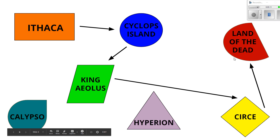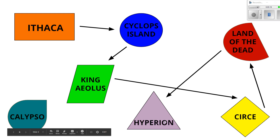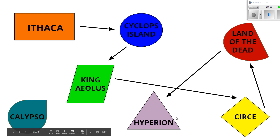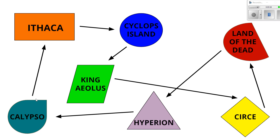For Circe, you might want to draw some pigs to show that's where the crew got changed into pigs. For the Land of the Dead, you might draw some zombie-type figures — be a bit creative with that. Then they got to Hyperion's Island, and between there and the previous stop is where they were attacked by the dragon and the whirlpool — you can draw those in. At Hyperion you might do a skull and crossbones, some cattle, or a storm. Then they got to Calypso's island, so you might draw a love heart because she was in love with him — be as creative as you like.